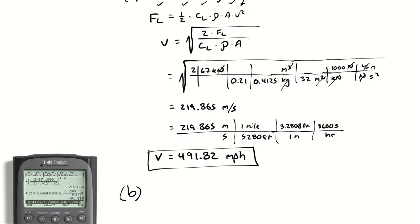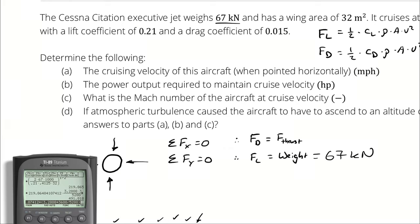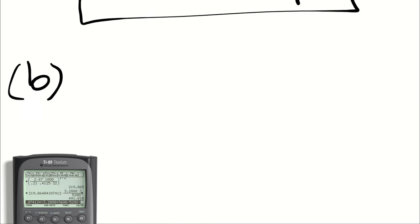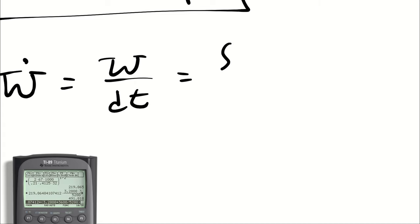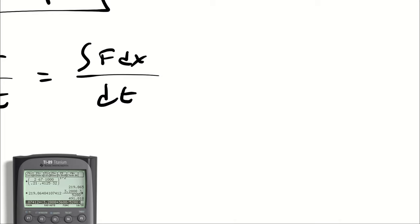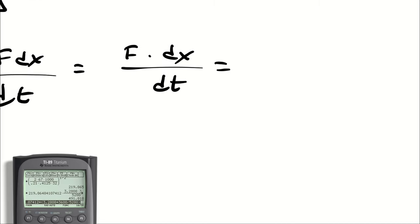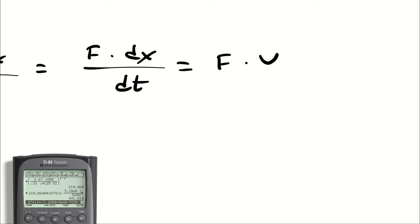Part B asks us to figure out what the power output required to maintain cruise velocity is. We know power is work per unit time, and work is the integral of force with respect to displacement. If my force is constant, which it's going to be because the thrust force is constant if I'm traveling at constant velocity, this comes out and I'm left with force times dx/dt, which is force times velocity.